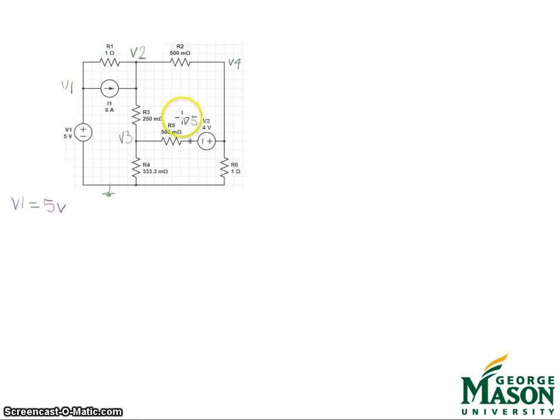And the other thing I know is the V5 and V4 make a super node and I'm gonna draw this around so that you see that this V5 is here with R5. So I know the V4 minus V5, oh my gosh I better learn how to write, equals 4 volts.